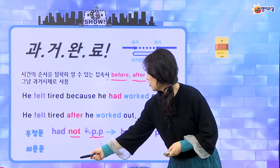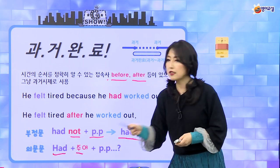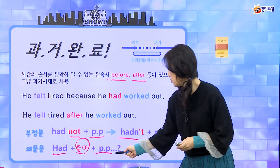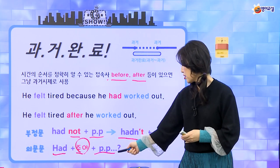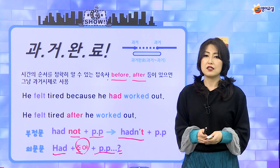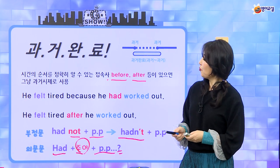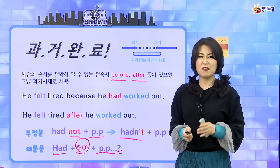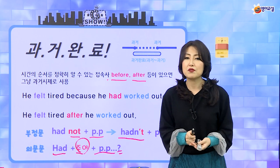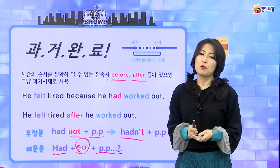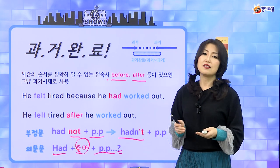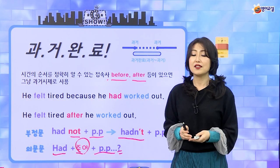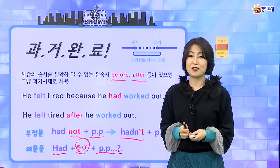의문문은 어떻게 만들어요? had를 주어 앞으로 빼고, 현재 완료랑 똑같이 had를 앞으로 빼고 그 다음에 PP가 뒤에 오고 question mark, 물음표 잊지 말고 찍어주면 되는 거예요. 과거 완료는 심플한 것 같아요. 하지만 과거 완료도 현재 완료처럼 네 가지 용법이 있는데, 보통 과거 완료는 아주 많이 쓰이지는 않아요. 과거에 일어난 일의 순서를 나타내는 것을 먼저 기억하면 좋겠어요.